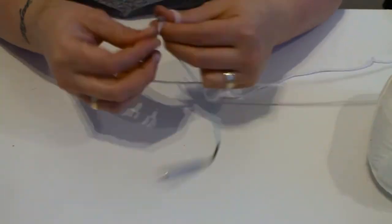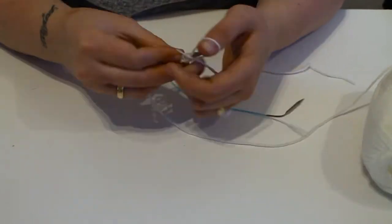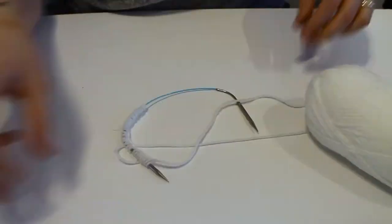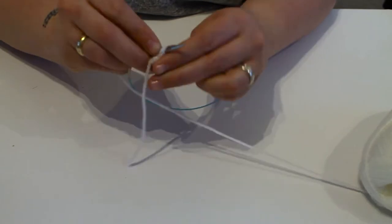First, cast on 32 stitches. Once you've cast on 32 stitches, it's a rib stitch for the first four rows like the previous hat.